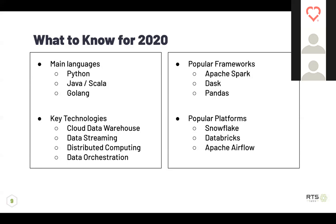Coming up to the end of the presentation, there are a few things you'd want to know for 2020. There are several main languages being used right now to process data. One of the big ones is Python — it gets a lot of flack for not being a compiled language and not being as performant, but I find it to be a great glue language that can bridge multiple technologies efficiently. Java and Scala are more compiled languages and are very good at big data processing — if you need to process a petabyte of data, you'll want to write it in Java or Scala for it to be performant at scale.